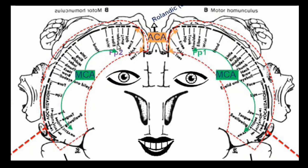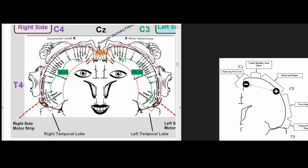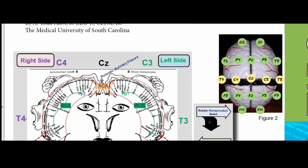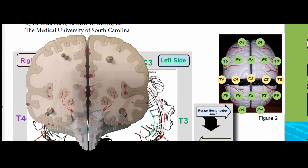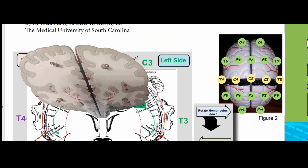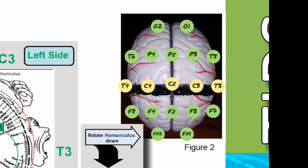The area of the motor strip that controls hand movement is going to be generally the same area along the sensory strip where you feel tingling in your hands or any type of sensation. So they're going to align topographically. If we look at the homunculus and rotate it down — taking this image that's looking at us and rotating it — we would see this image right here of the brain.